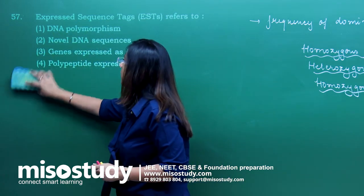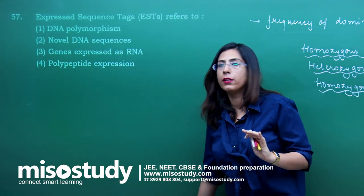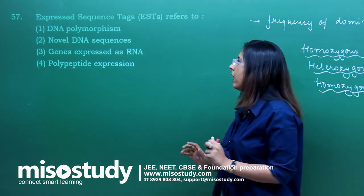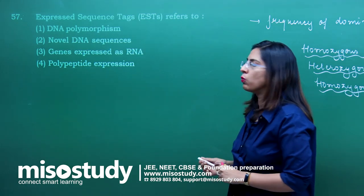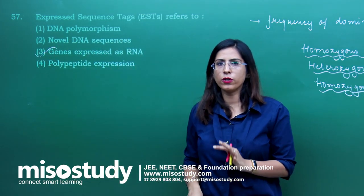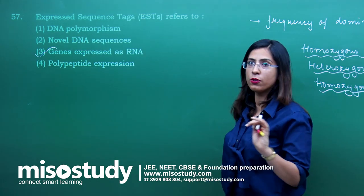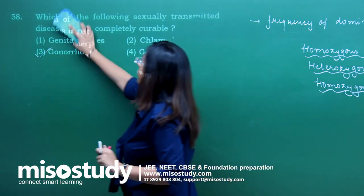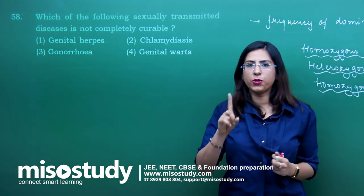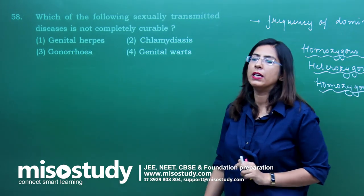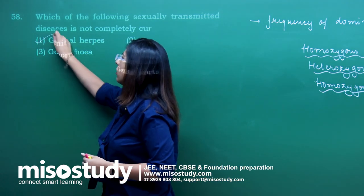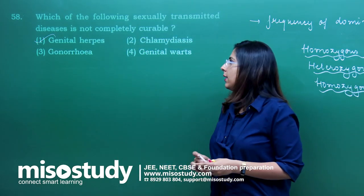Question number 57 — a direct question from NCERT on the topic of fingerprinting. EST or expressed sequence tag refers to genes which are expressed as RNA. The correct answer is option 3. Question number 58 — which of the following STDs is not completely curable? Among the options — genital herpes, chlamydiasis, gonorrhea, and genital warts — genital herpes is not at all curable. That is the correct answer.